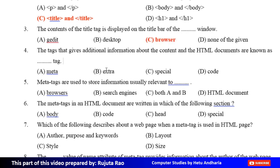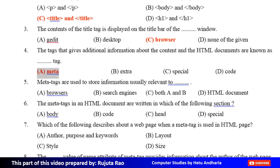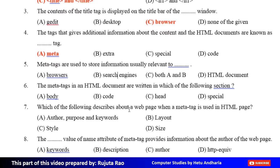Fourth MCQ: The tags that give additional information about the content of HTML documents are known as dash tag. Option A: Meta tag, Option B: Extra, Option C: Special, Option D: Code tag. The correct answer is Option A, Meta tag. Fifth MCQ: Meta tags are used to store information usually relevant to dash. Option A: Browsers, Option B: Search engines, Option C: Both A and B, Option D: HTML document. The correct answer is Option C, Both A and B.